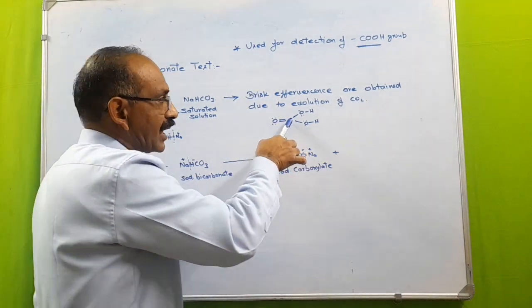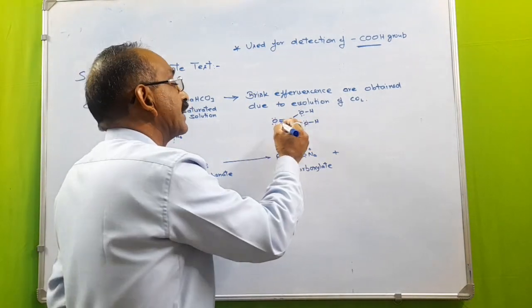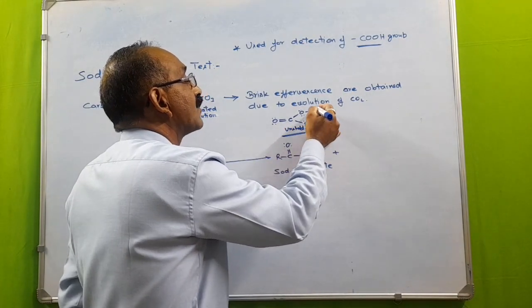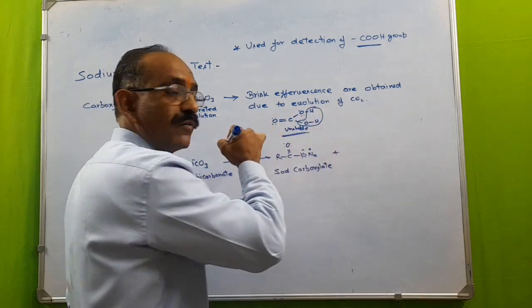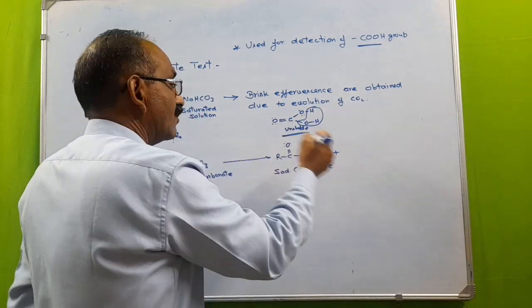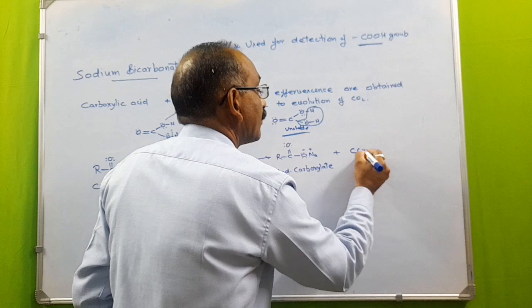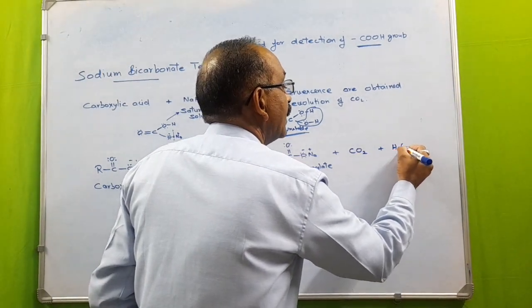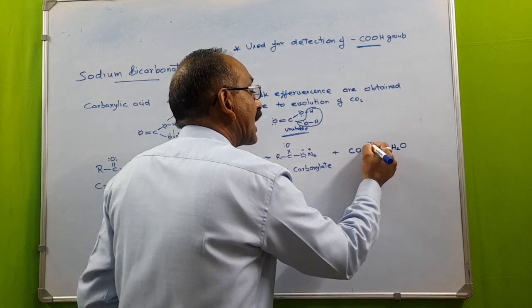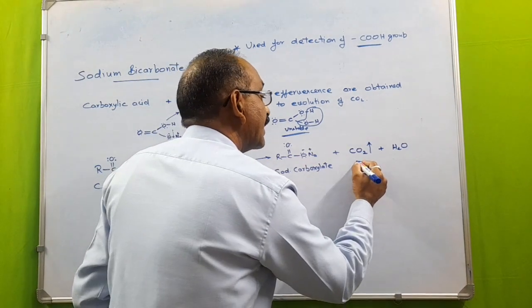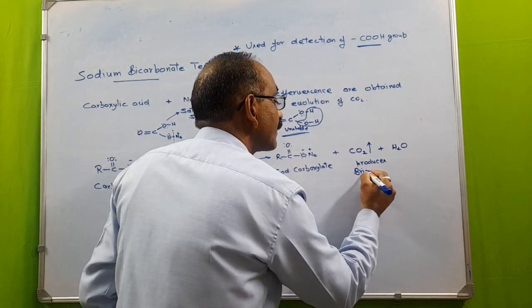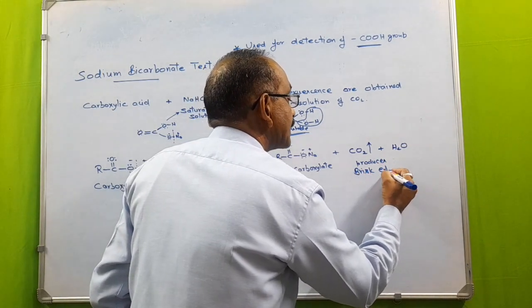See here, at the one carbon there are two OH groups and this type of species is unstable. That's why it will immediately lose a molecule of water. And now here as the end product we will get CO2 and H2O. This CO2 gas escapes free and produces brisk effervescence.